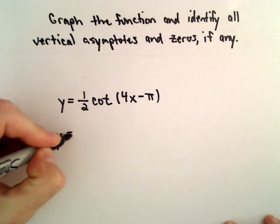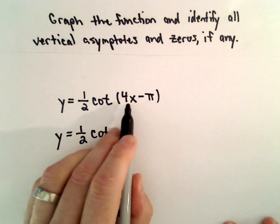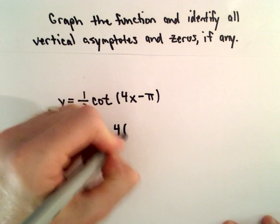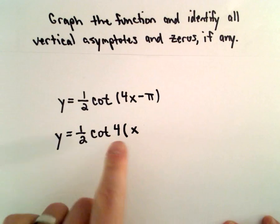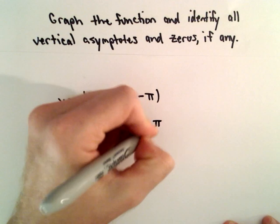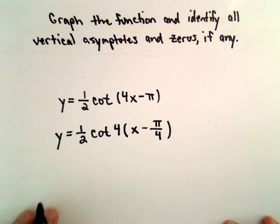The first thing I'm going to do is make the coefficient on the x inside the parentheses equal to 1. And to do that, I'm just going to factor the 4 out. So 4 times x will give us 4x, and 4 times negative pi over 4 will give us negative pi.